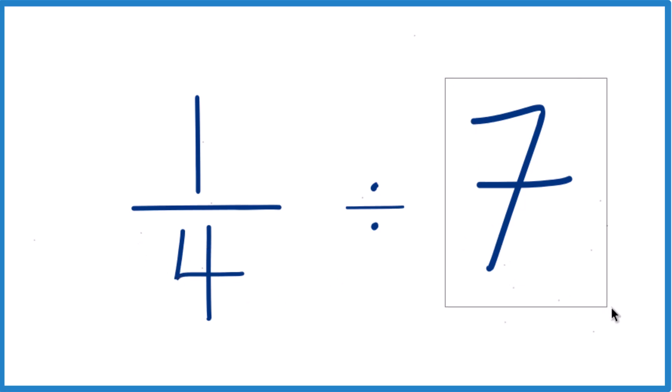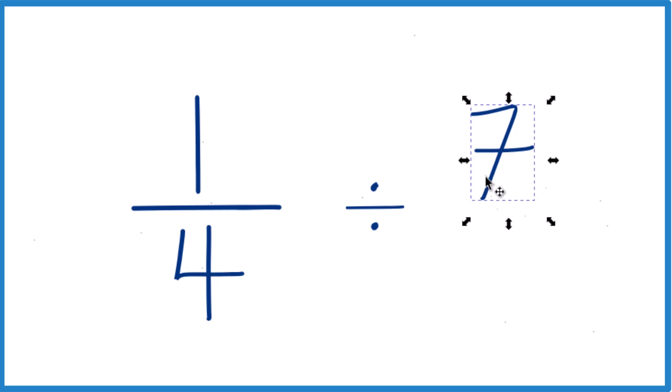For the seven, what I like to do is call this seven over one. It's still seven, it's just seven divided by one, it equals seven.